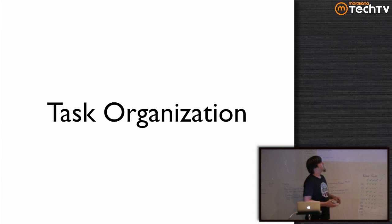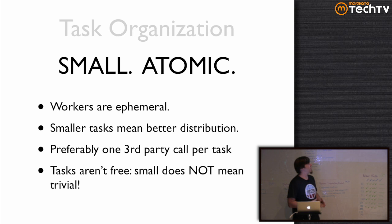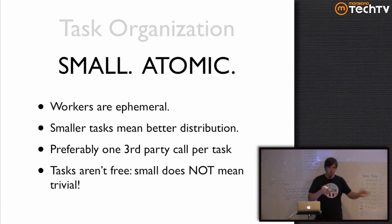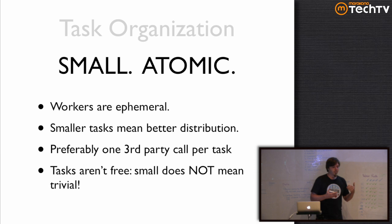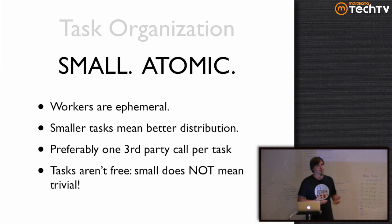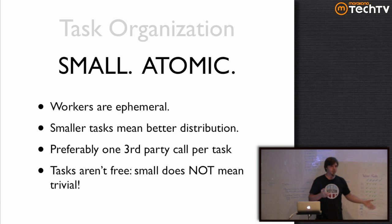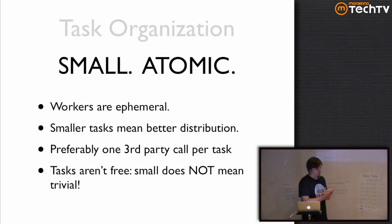For organization, you want to try to make your tasks small and as atomic as possible. The idea is that workers are ephemeral units — you should be able to kill them at will, spin them up at will, and you get much better distribution from small tasks. You can spread them out better and parallelize them. You should preferably only make one third-party call per task. If you have more than one API call and you burn through the first two then fail on the third, you've essentially lost two calls from your rate limit with no effective work done. If you separate them and use a dispatcher to call each one in series or parallel, you keep each stage of work and get better distribution.